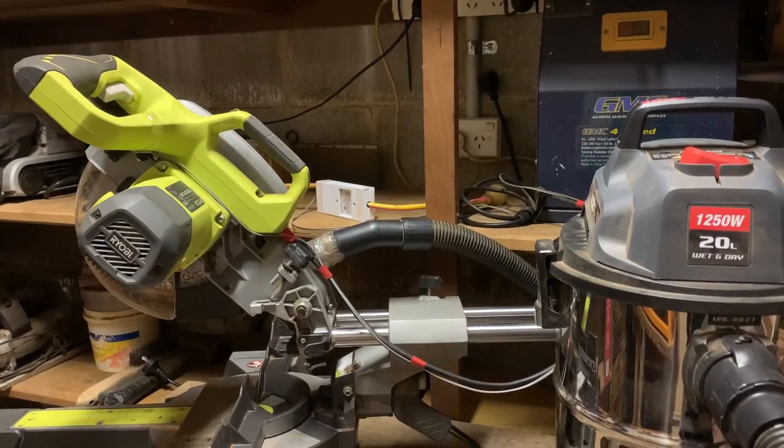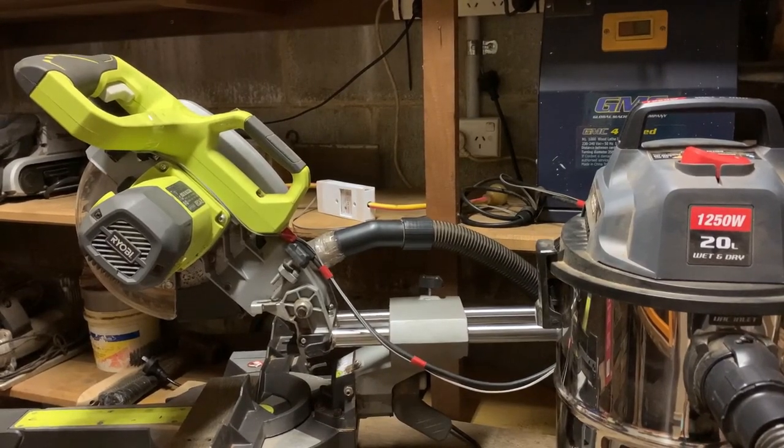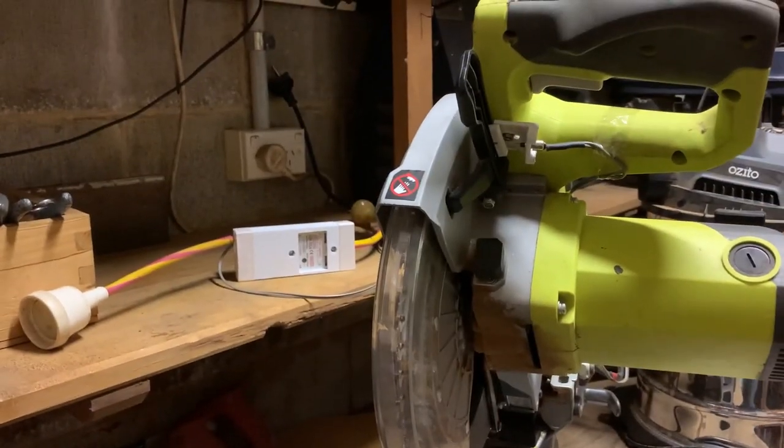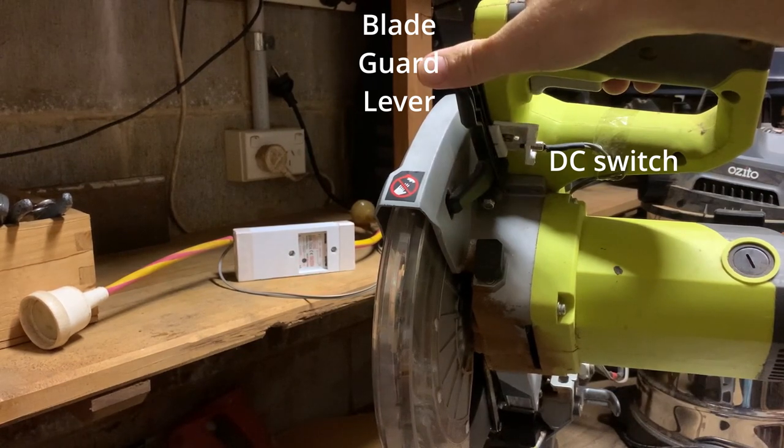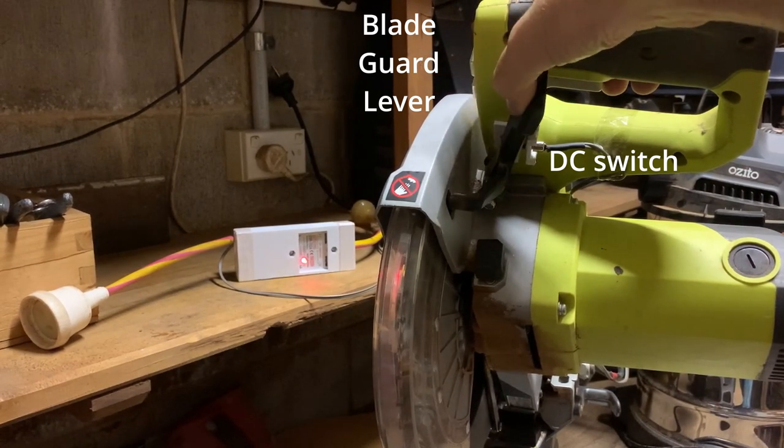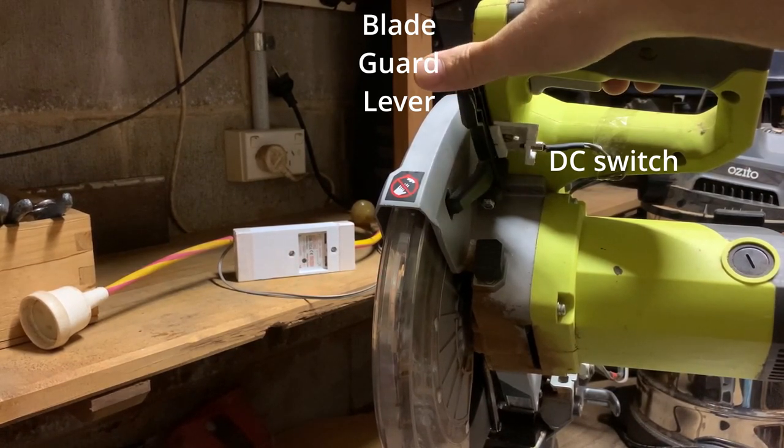Here you can see this in operation mounted on the compound miter saw. The DC switch is mounted so that when the blade guard release is moved, the SSR is turned on as can be seen by the red LED lighting.